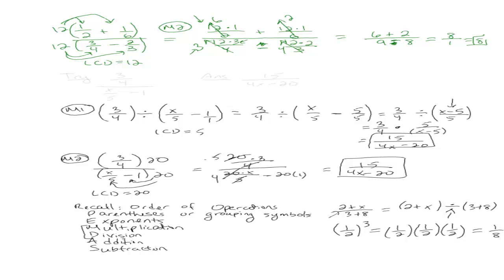So I'll have one for you to try now. Try 3 quarters over x over 5 minus 1. Let me give you the answer before you start, so you can check your work. The answer is 15 over 4x minus 20. So go ahead and try it using whichever method you like.